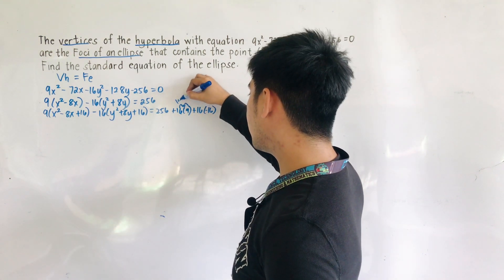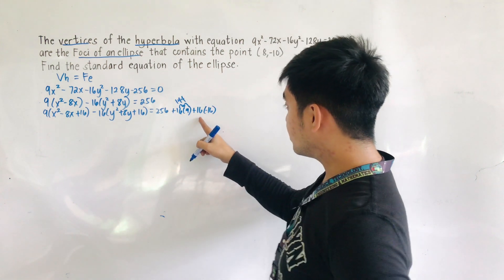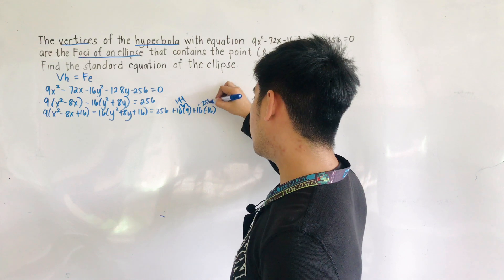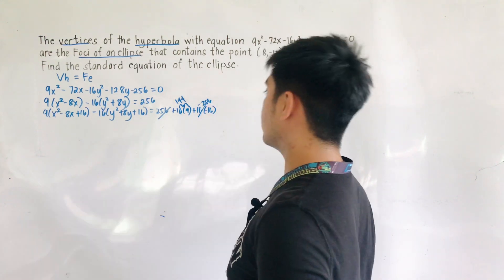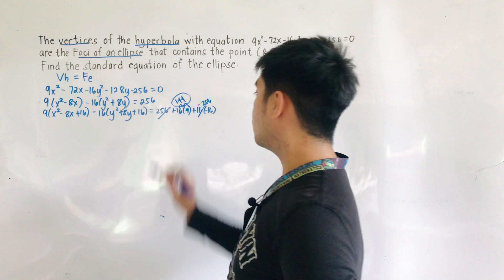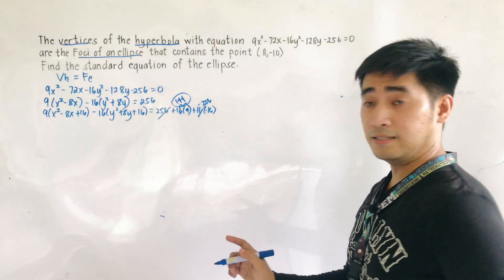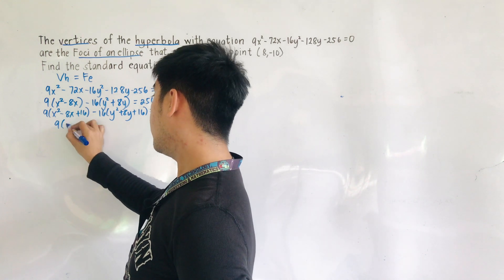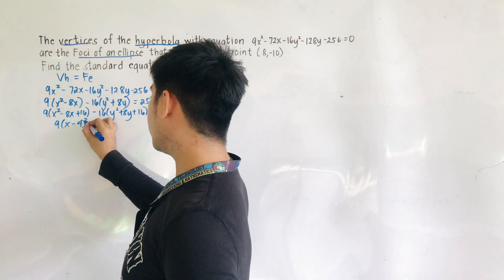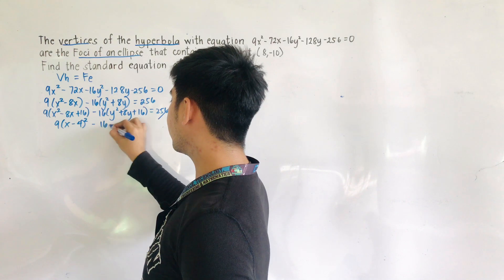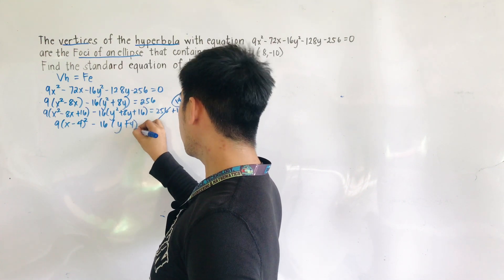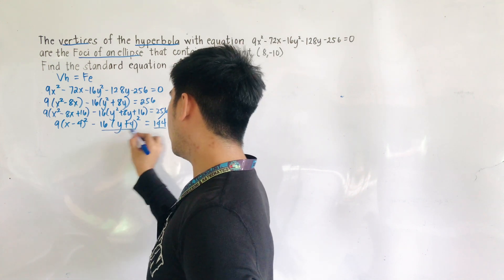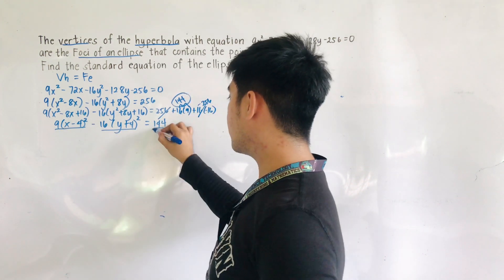16 times 9 is 144, and 16 times negative 16 is negative 256. We cancel these out, so we're left with 144 on the right side. Factoring, we now have (x minus 4)² times 9 minus 16 times (y plus 4)² equals 144. All we have to do now is divide all the terms by 144.